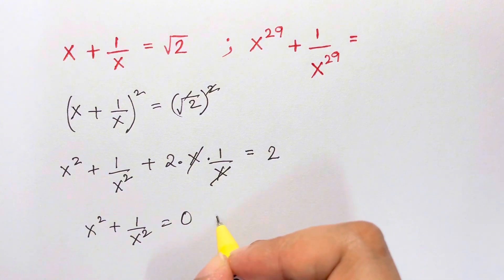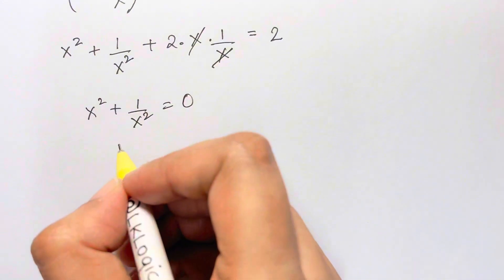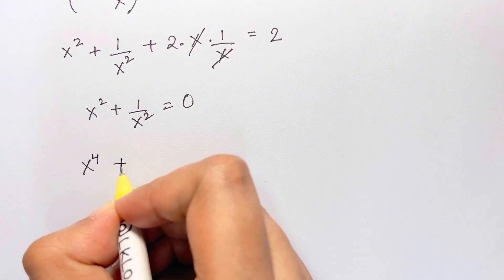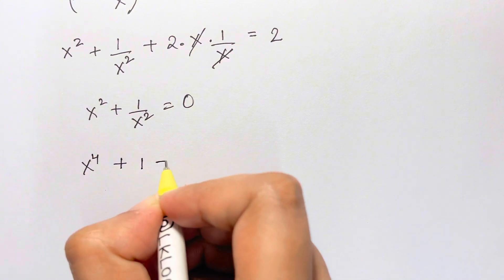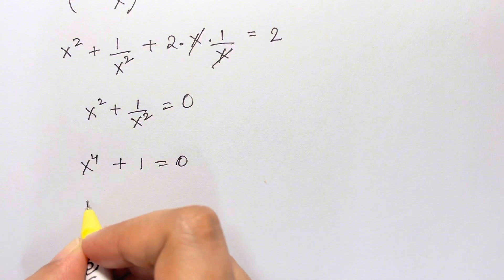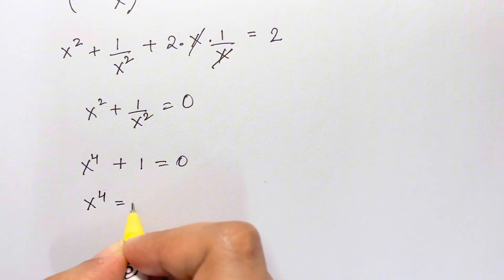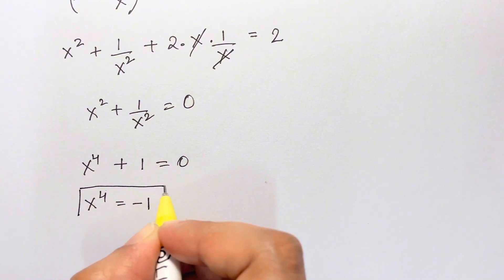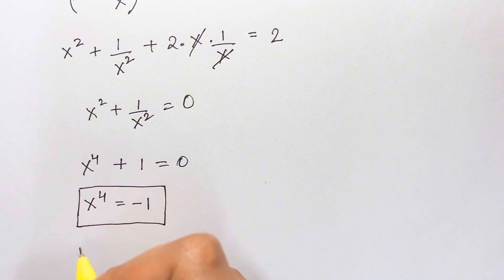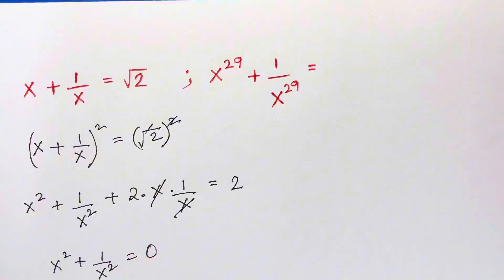So x² + 1/x² equals 0. Taking the LCM, we get x⁴ + 1 = 0, which means x⁴ = -1. That result is very important for the next steps.